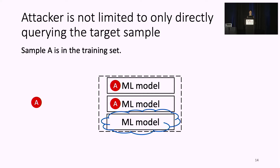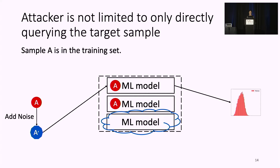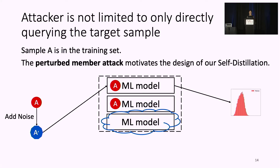However, the attacker is not limited to directly querying the target sample. For member sample A, instead of querying A directly, the attacker can add small noise to A, turning it into A-prime. Splitter-I will regard A-prime as a non-member and might use models trained with A-prime — for example, the top model — so the final predictions will follow the member distribution. This perturbed member attack motivates our design of the second component: self-distillation.